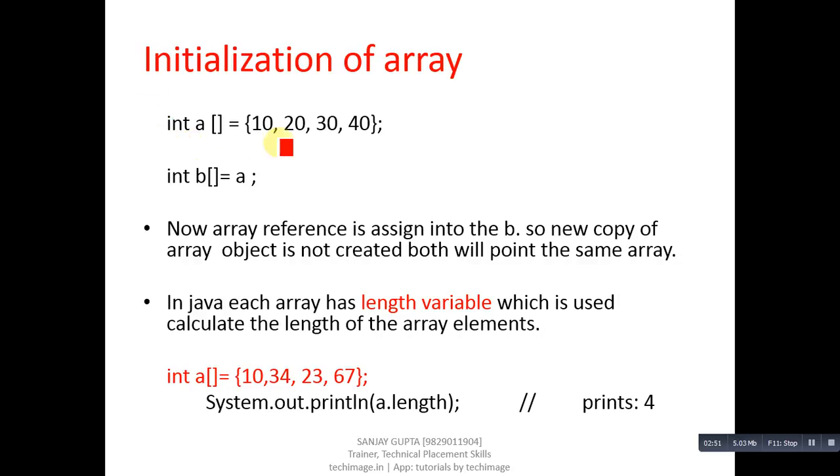This first statement is similar to C and C++, but second is different. Here b array is created and it is receiving reference of a. So now array reference is assigned into the b. New copy of array object is not created - both will point to the same array.